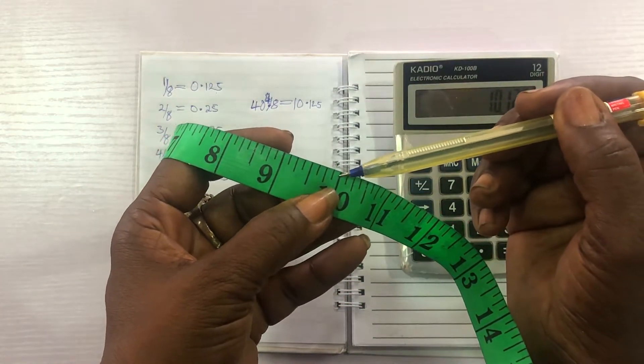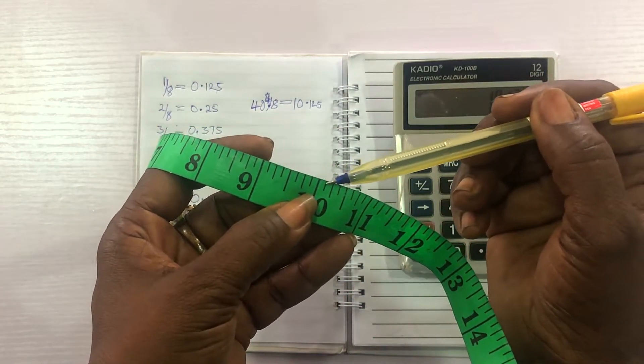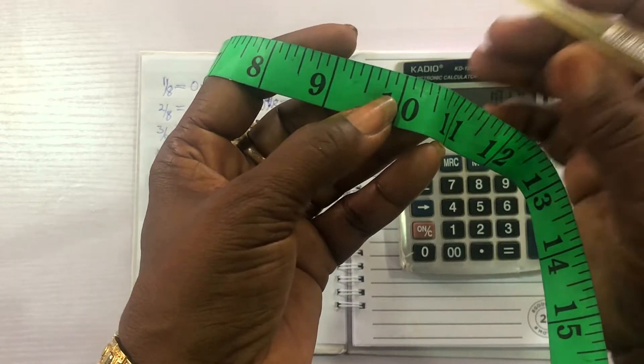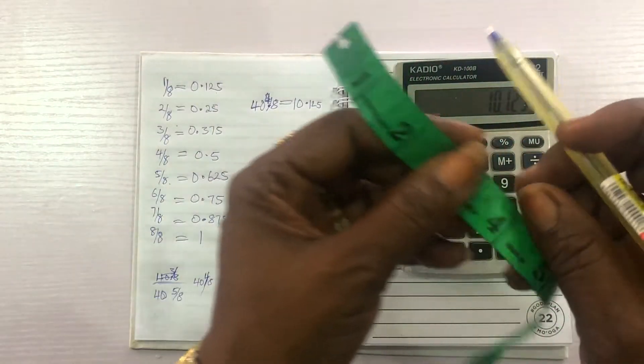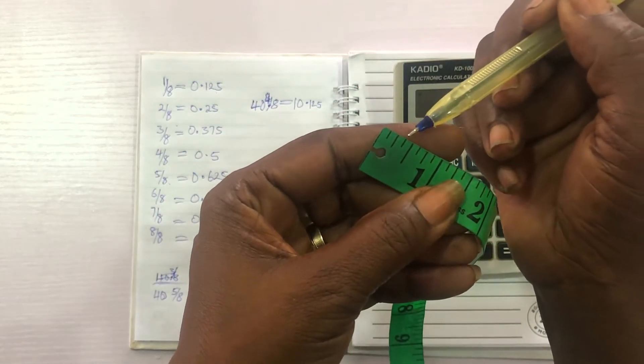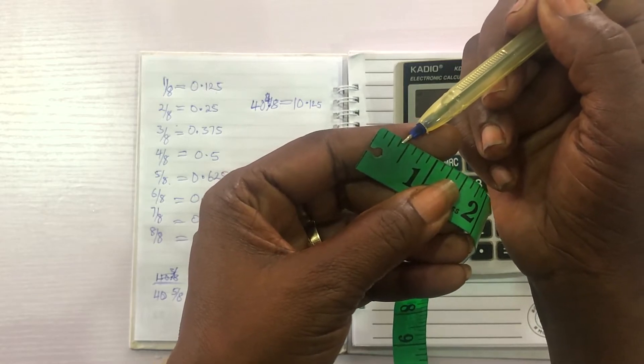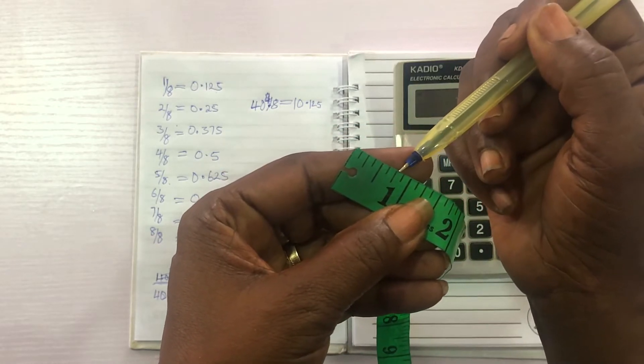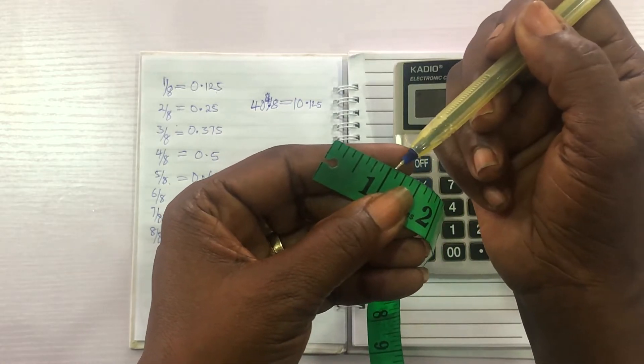It means, we are going to, your tape rule will be here on your material. 10 one eight. Because if you follow your tape rule like I have told you, this is one eight. This is two eight. This is three eight. Four eight. Five eight. Six eight. Seven eight. Eight eight gives us one inch.